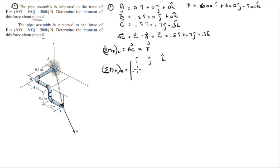You put AC, which is 0.5, 0.7, and negative 0.3. For the second row, you put the force vector, which is 600, 800, negative 500. I, J, 0.5, 0.7, 600, 800.